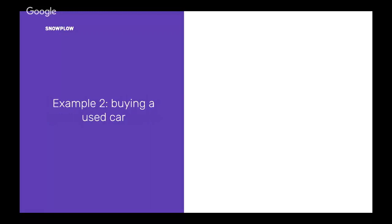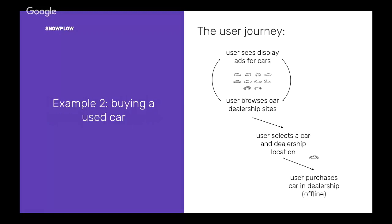The next example is buying a used car. Buying a car is a big decision for most people — a lot of research gets done before people purchase because it really is a big investment. Normally people spend a really long time, 15–20 hours, looking at ads online, browsing dealership sites, spending a lot of time researching. When they finally find their favorite car, they pick it and find a dealership nearby that sells it, then go into the dealership and purchase the car there.